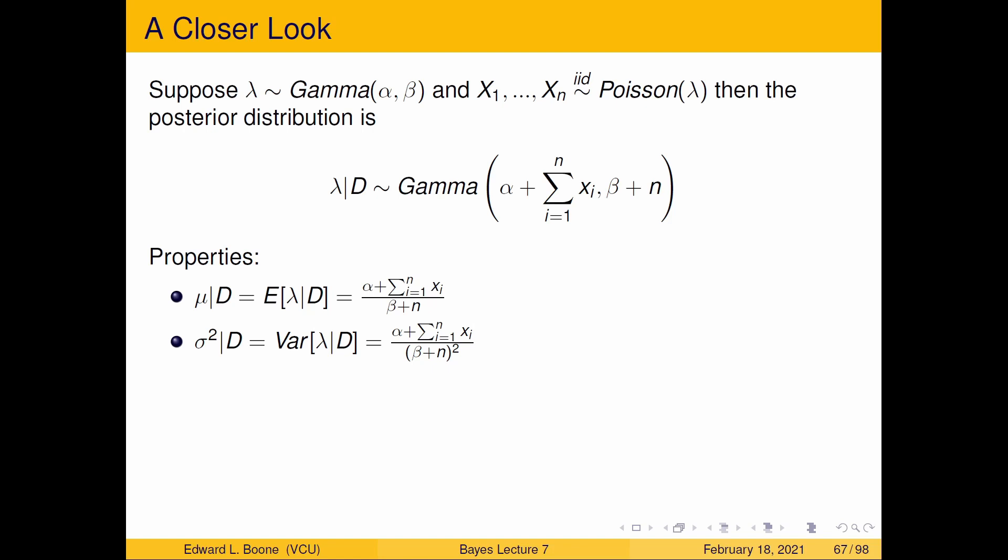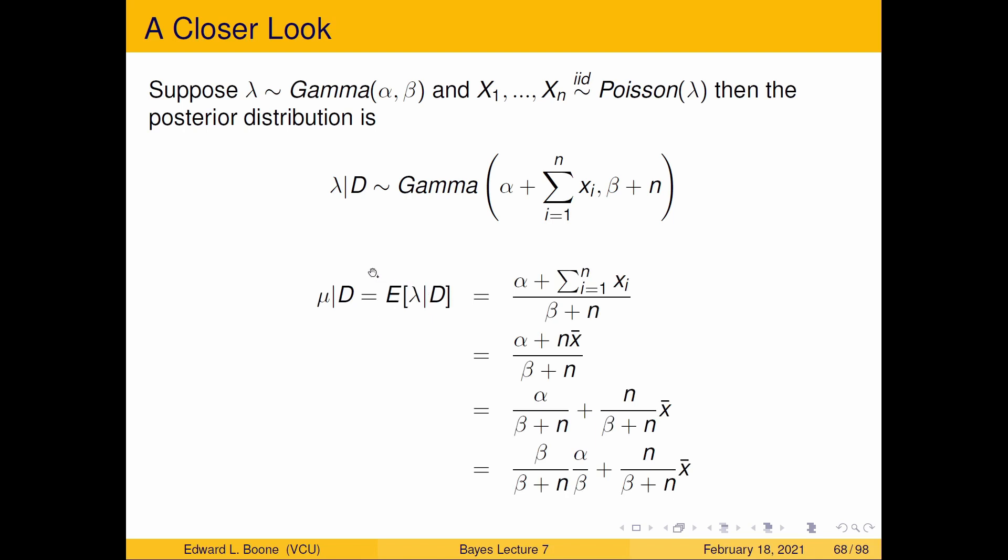So if we just do a little bit of algebra here, μ given the data is the expected value of λ given the data. Well, if I just play around here, nx̄ is the sum of the Xᵢ, just by multiplying that, you'll see that could be substituted in, and there's a reason I want to do this.